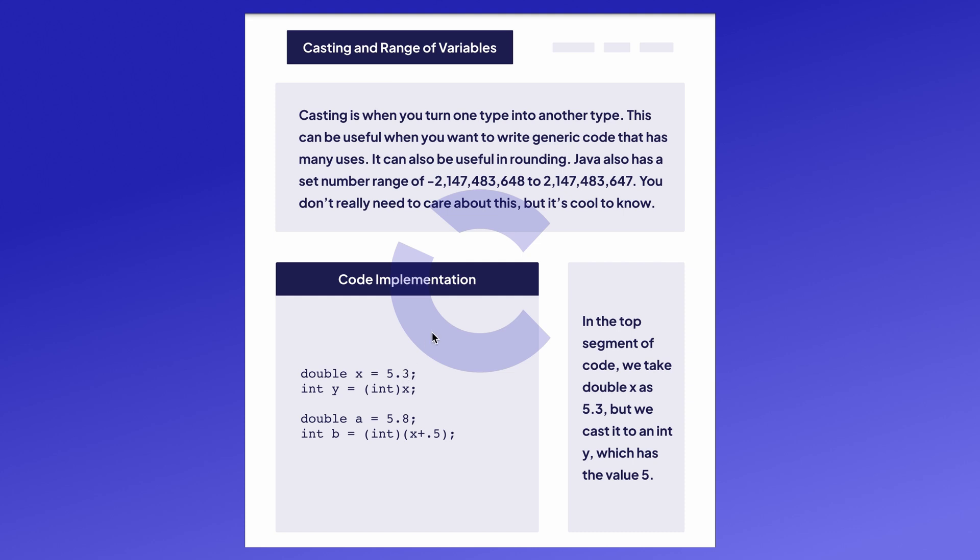So for example here, if you have a decimal, let's say 5.3, and you want to store that into an integer variable because you don't really care about the decimal, the 0.3, you simply put int in parentheses before the variable and it will change it into 5. So int y would now be 5.